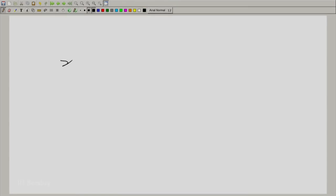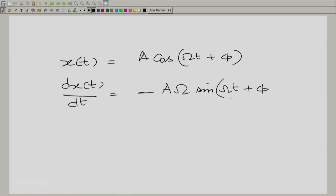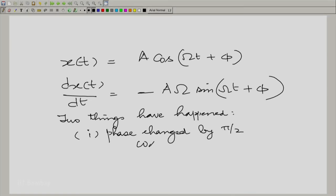And let us find out dx(t)/dt. It is of course equal to -Aω sin(ωt + φ). So, what happens when we take a derivative? Two things have happened. One is the phase is changed by 90 degrees. That is why you go from cos to sine and the second is the amplitude is multiplied by omega.